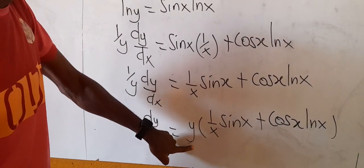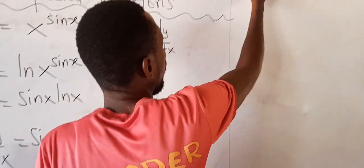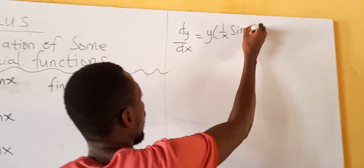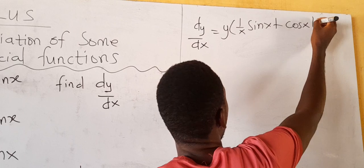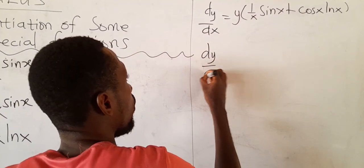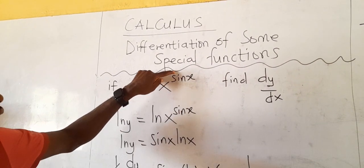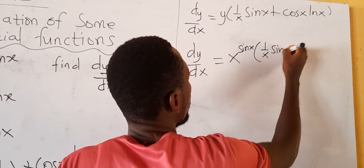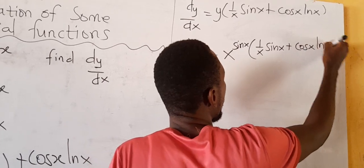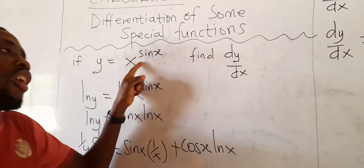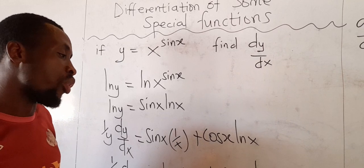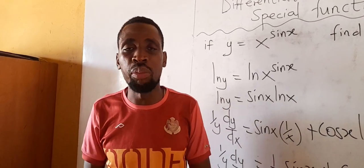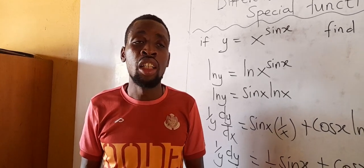Multiplying both sides by y, our dy/dx equals y times (sin x over x plus cos x ln x). Replacing y with x^(sin x), we get dy/dx equals x^(sin x) times (sin x over x plus cos x ln x). This becomes the derivative of this function. I hope you get that — this is very easy. Please remember to subscribe to my YouTube channel and click on the notification bell so that if I share a video, you'll be the first to receive it. Until we meet again, bye-bye.